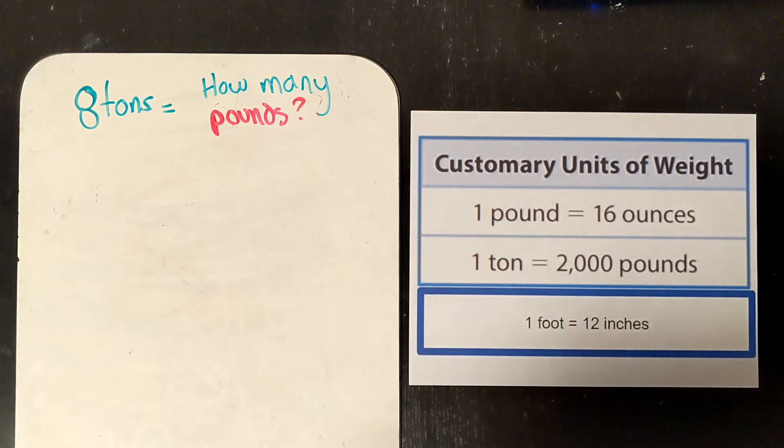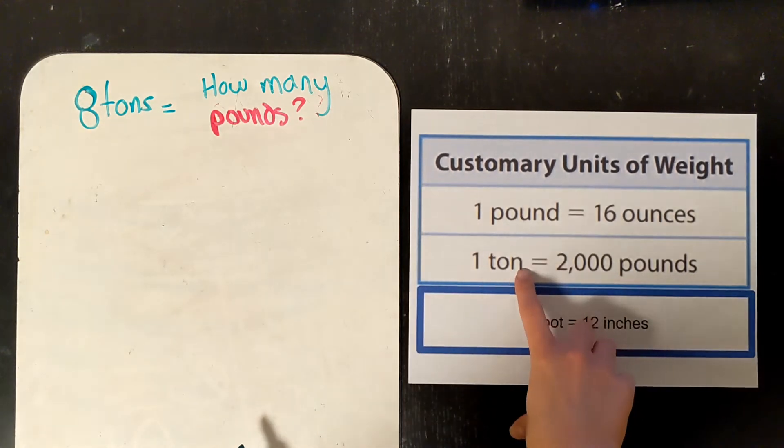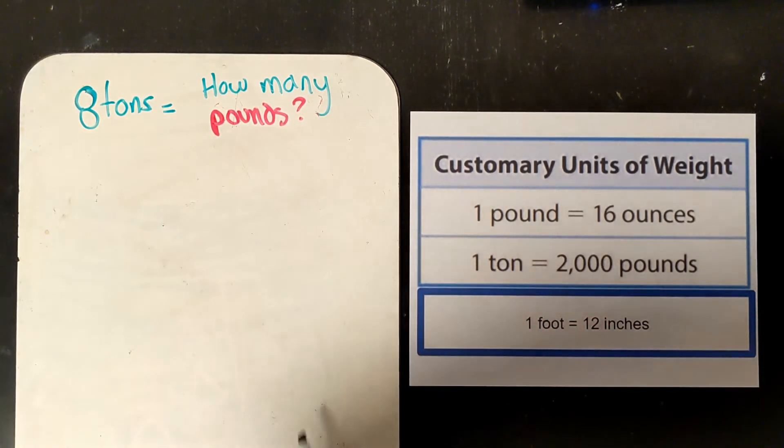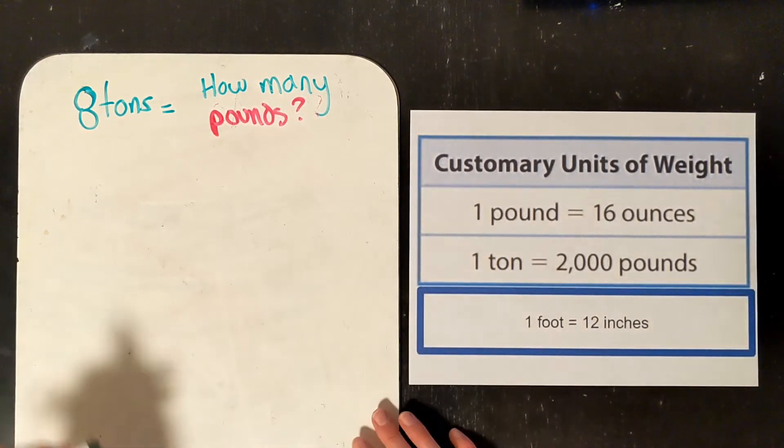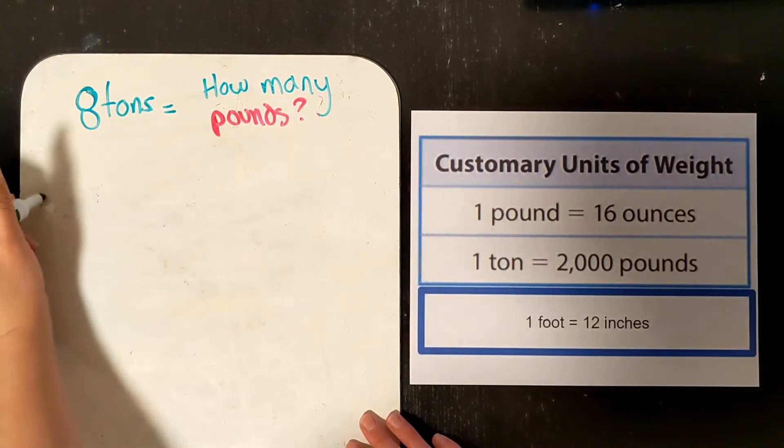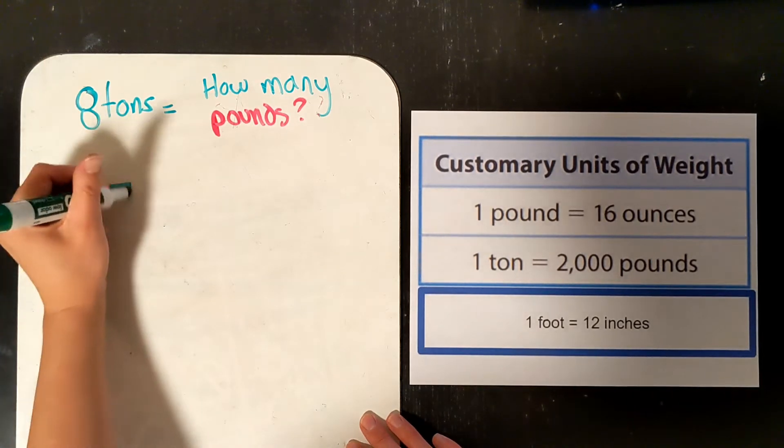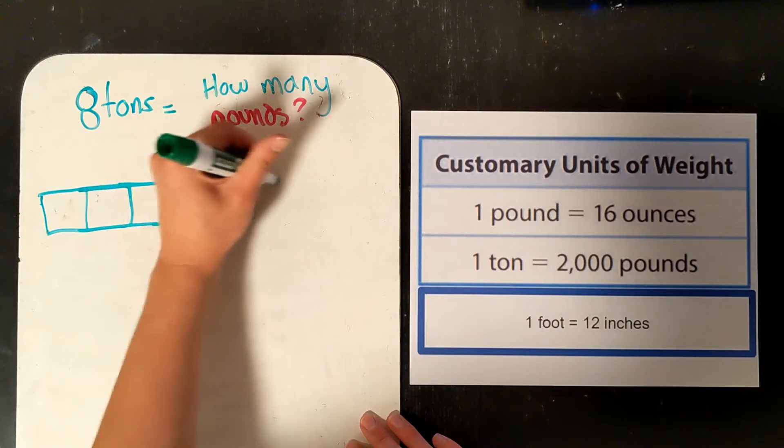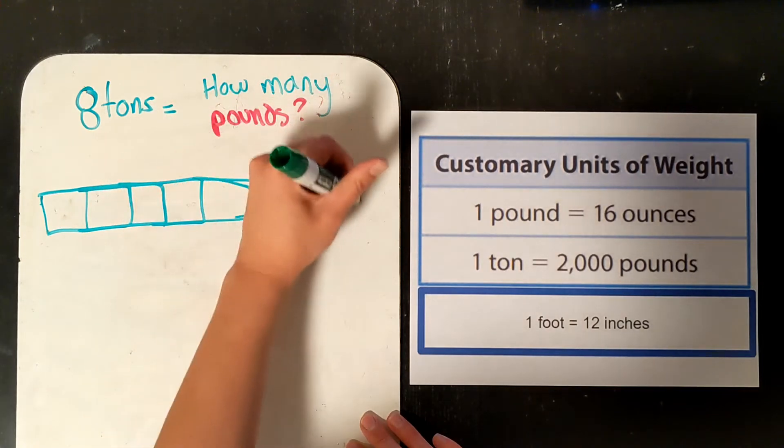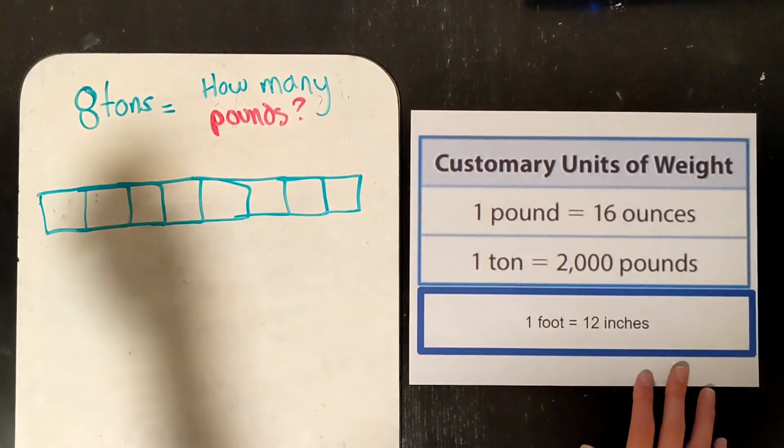So our first one is tons. So 8 tons equals how many pounds? So I'm going to draw a bar model. I'm working with 8 here. So I have 8 tons: 1, 2, 3, 4, 5, 6, 7, 8 tons. And then looking at my chart, I know that each ton is 2,000 pounds.